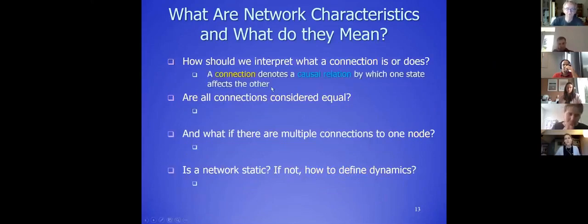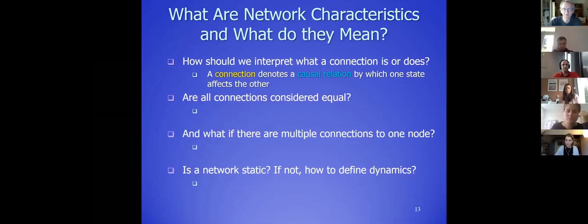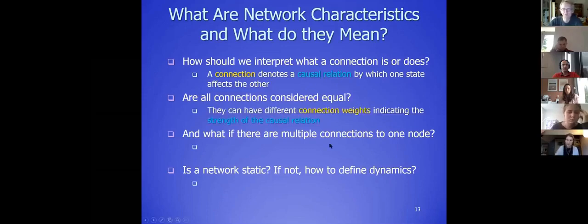We consider that connections between nodes have some causal effect — they denote a causal relation. If connections don't do anything to nodes, the network would only be an administration system, which is not what we're interested in here. Connections define how nodes affect each other. Are all connections equal? No — connections have weights, usually between zero and one, indicating the strength of the causal relation, so one connection can be stronger than another.